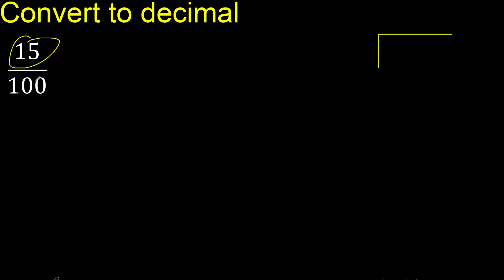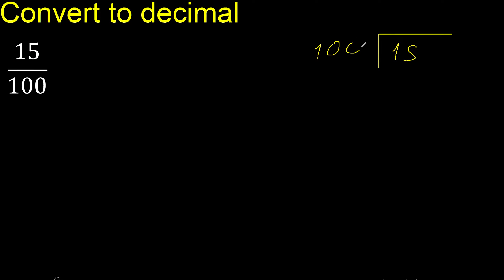15 divided by 100. 15 is less than 100, therefore complete — always complete with 0. Here: 0 point.